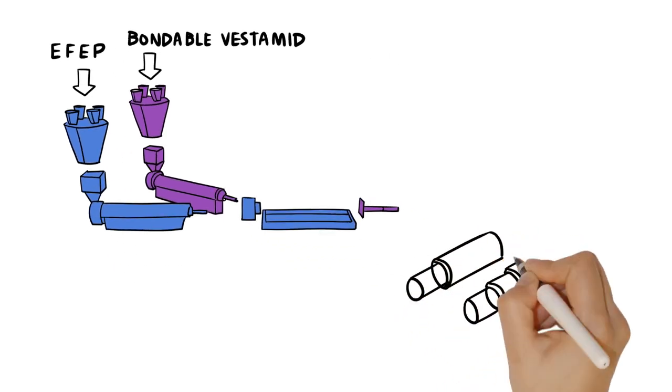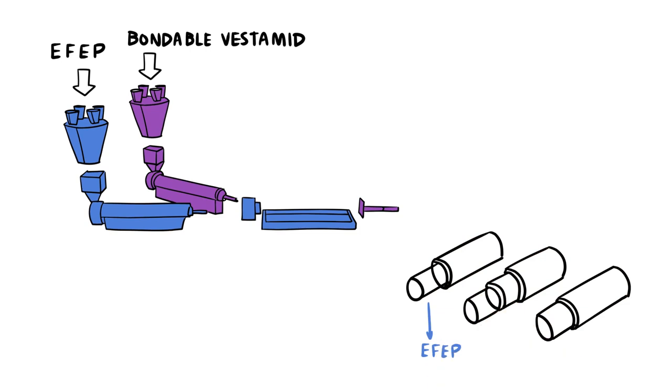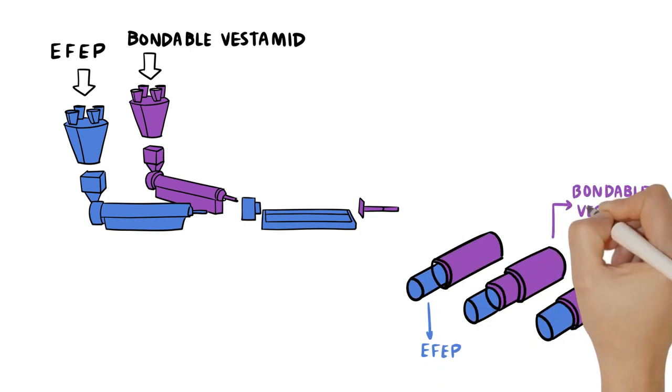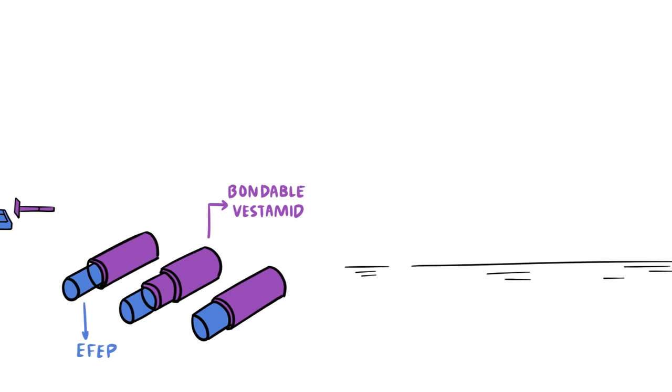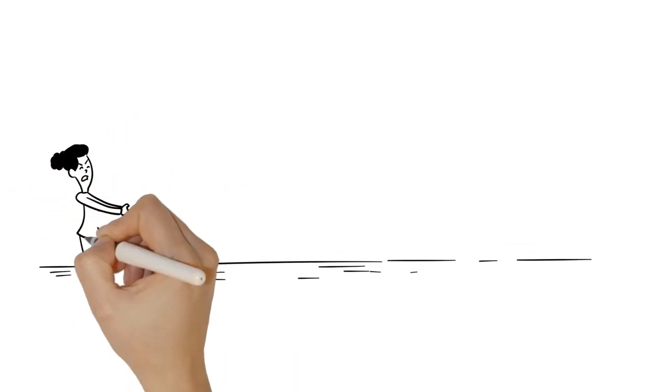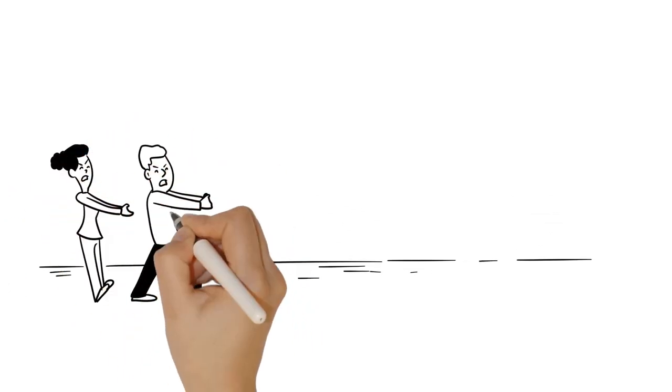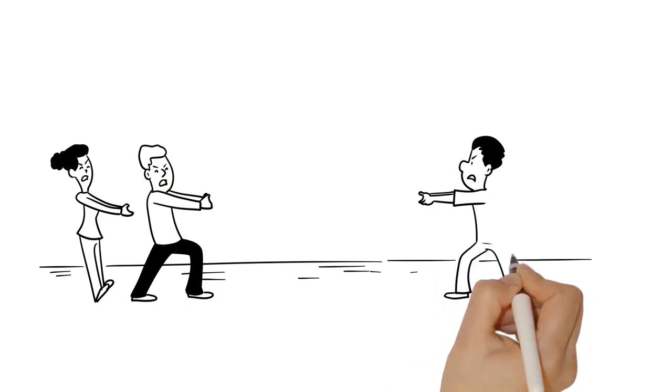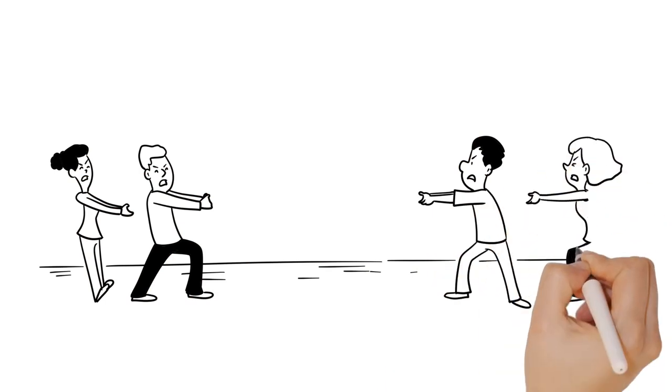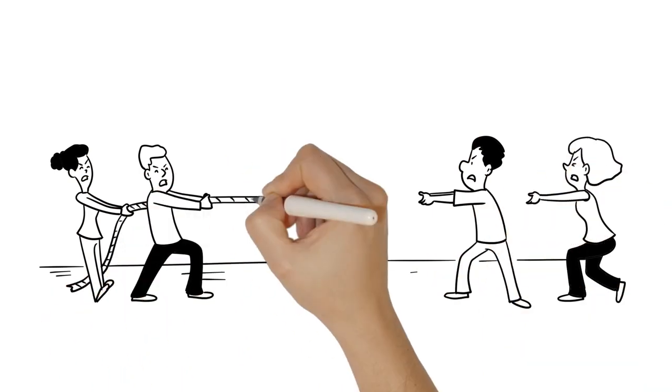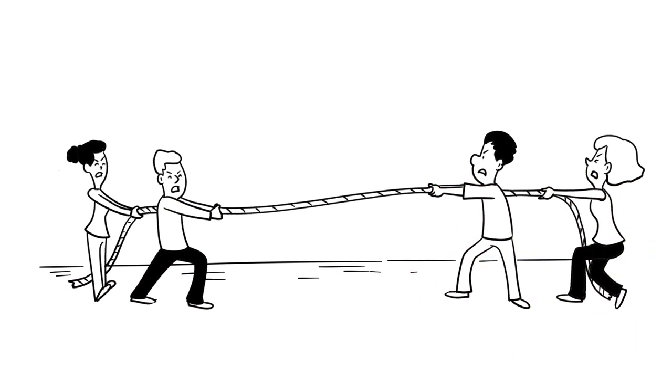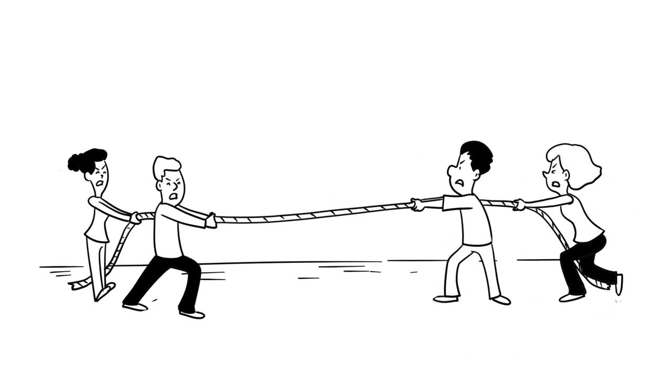Both polymers travel through full length of extruder and exit the die as a well-bonded, two-layer catheter, all in one step. The unique chemistry of bondable Vestamid allows it to adhere with fluoropolymer exceptionally well, without need of surface treatment or adhesive layers, to produce a catheter that can offer up to 10 times more bonding peel strength than current products.